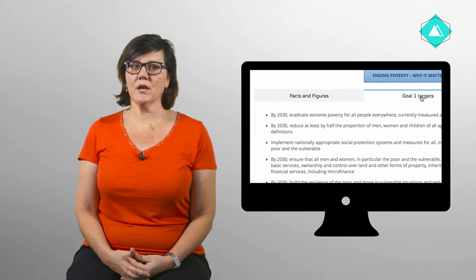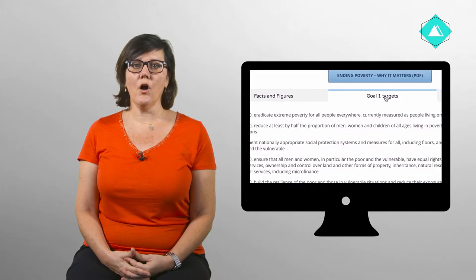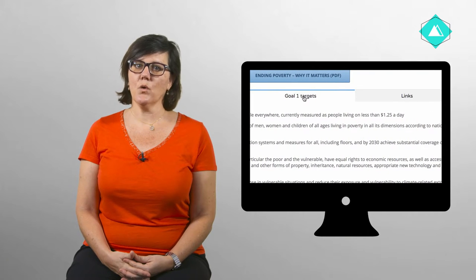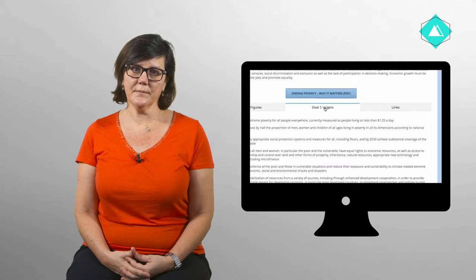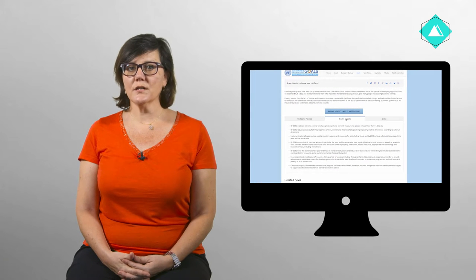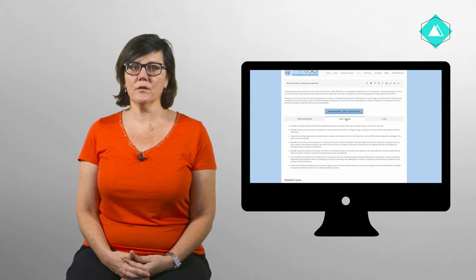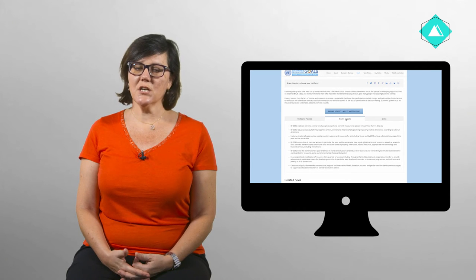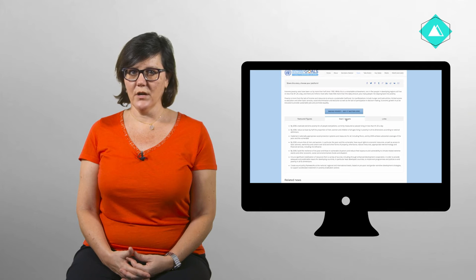Such as, by 2030, eradicate extreme poverty for all people everywhere, currently measured as people living on less than $1.25 a day. These targets or objectives lay out several overlapping paths to reaching goal 1. The idea is, if we can achieve these seven objectives by 2030, we will have achieved our vision or overall goal.